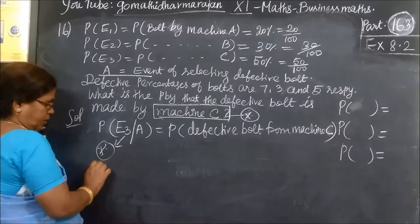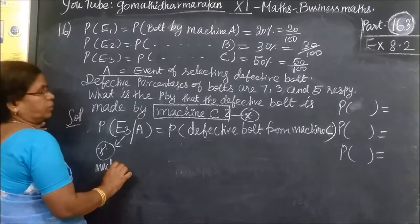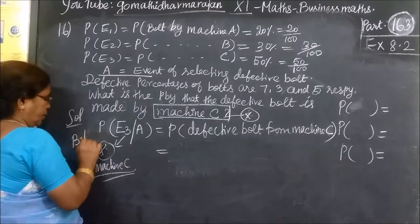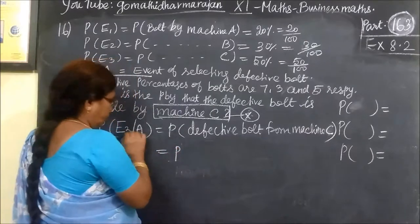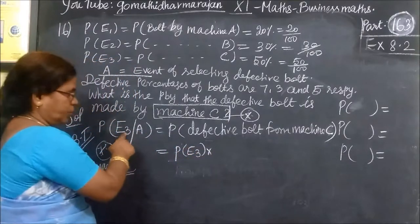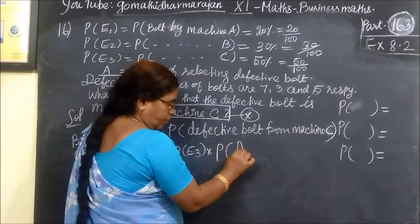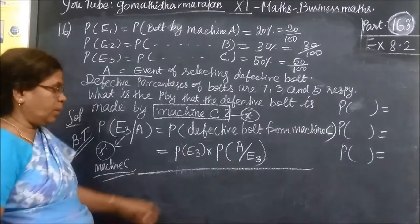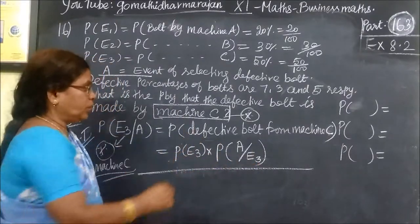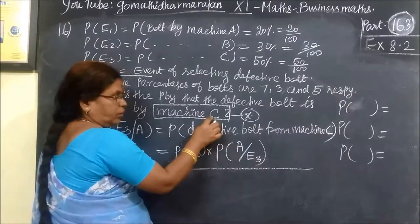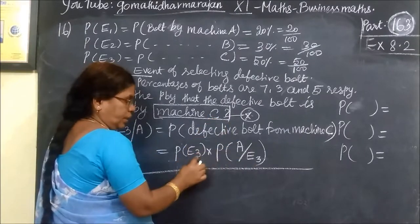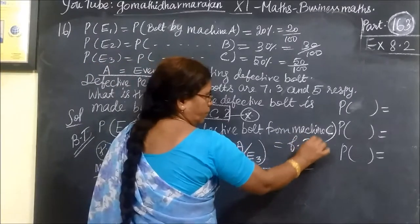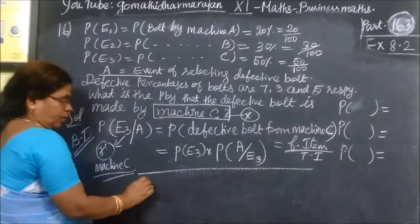We are considering machine C. We only have to find for machine C. We use machine C, the key function. We get to E3. Defective bolt from machine C, E3 is the event. This is E1 and E2. Machine A is E1, machine B is E2, C is E3. This is the total, this is the favorable item.